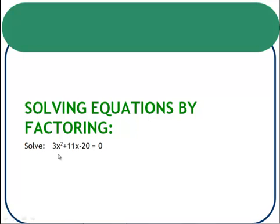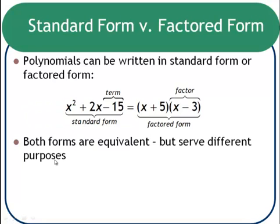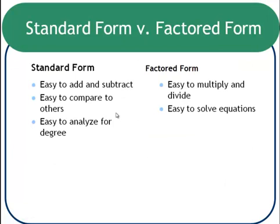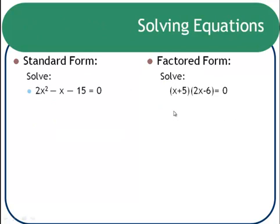Before we dive into that, let me do a quick review of some vocabulary. Polynomials can be written in two different forms. One is called standard form, when you can see all three different terms. And then there's factored form, when you've got two different factors multiplied together. They're both equal forms, but they serve different purposes. One of the reasons that factored form is nice is because it makes equations much easier to solve.